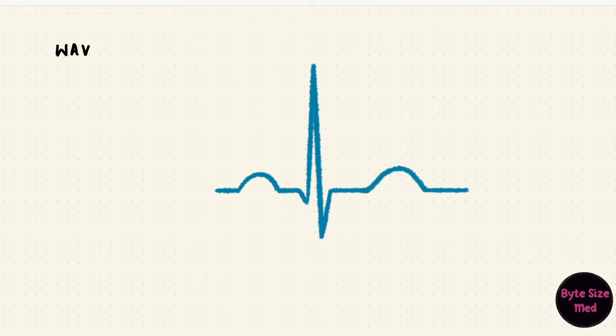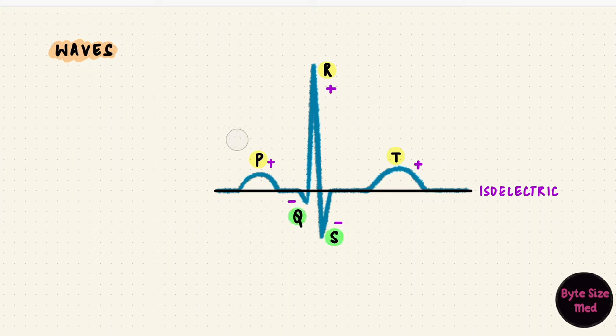There are usually five waves in an electrocardiogram: P, Q, R, S, and T. Whenever a wave goes above the baseline, it's called a positive deflection. Below the baseline is a negative deflection. The line itself is isoelectric. Here P, R, and T are positive deflections, and Q and S are negative deflections. But like I said earlier, they might look different in different leads.